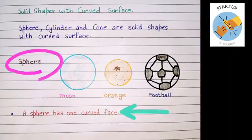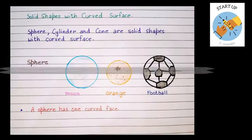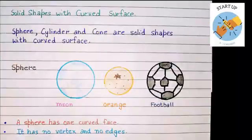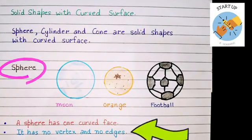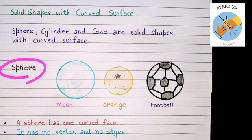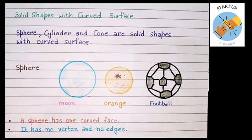A sphere has only one curved face. As you can see that it has only one curved surface. It has no vertex. Vertex means corner. And a sphere has no edges also.